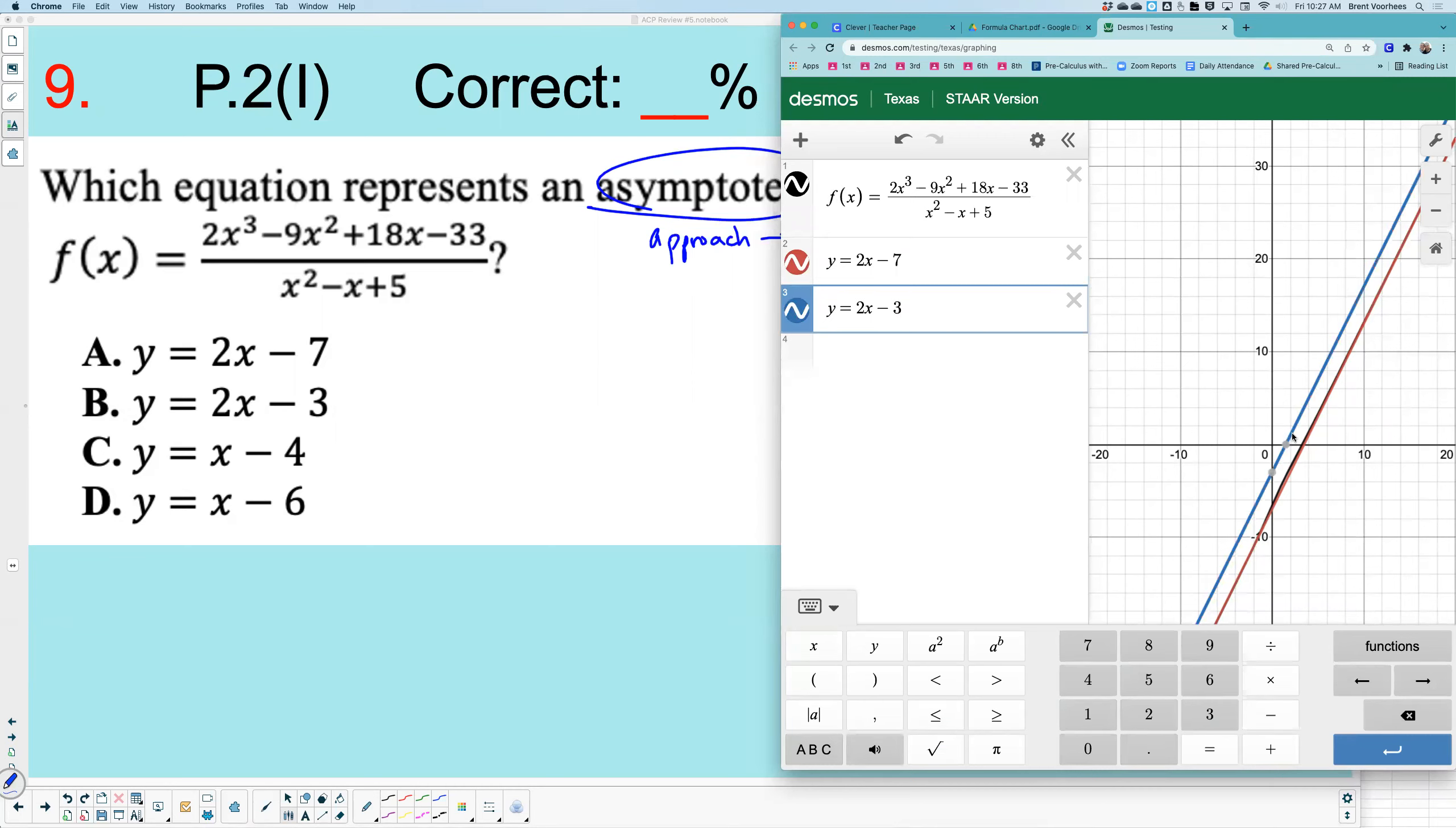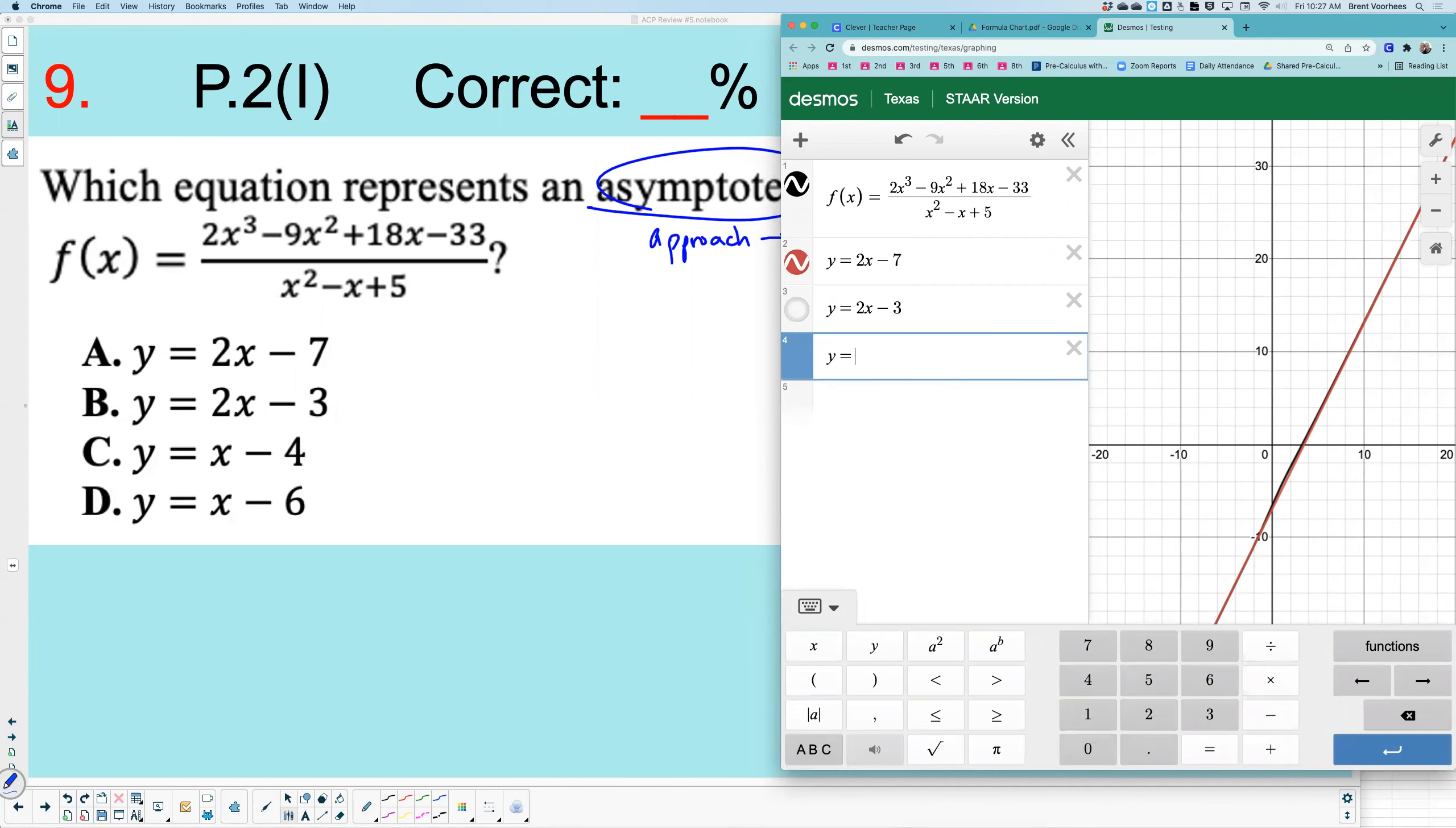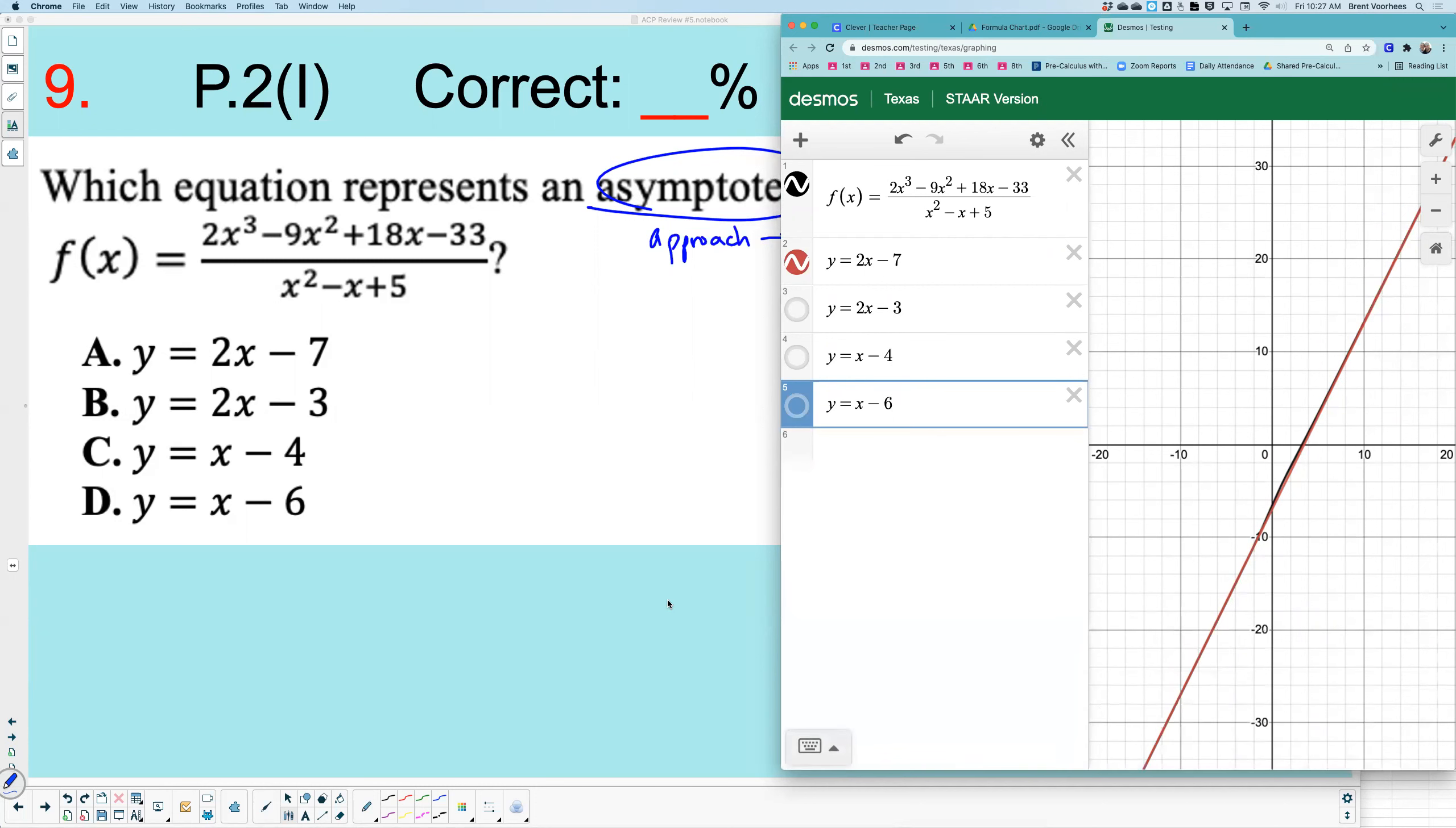Let's just make sure. Does that look as accurate? No, that one's not it. Y equals x minus 4. Does this look like it? No. Y equals x minus 6. That's not it either. It's A. Again, you could do long division if you wanted, but I'm not.